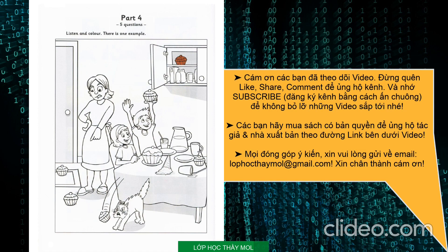2. And there's a small girl at the table with short hair. Can you see her? Yes. She's got a big cake. Yes. Can you colour the girl's cake yellow, please? OK, then.